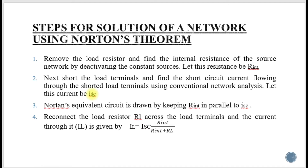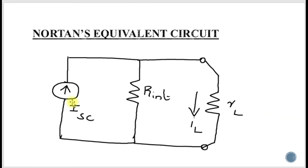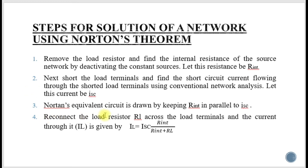Let the short circuit current be ISC. Using nodal analysis or mesh analysis, find ISC. Then draw the Norton's equivalent circuit by keeping R internal in parallel with ISC. Calculate R internal first, then calculate ISC, then redraw the Norton's equivalent circuit. Connect load resistor RL across the load terminals. The load current is given by: IL = ISC × R_internal / (R_internal + RL).